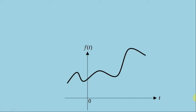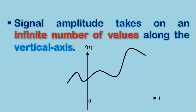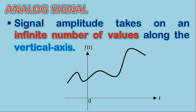Now look at this illustration. You may observe that the signal is taking on an infinite number of values along the amplitude, or along the vertical axis. A signal whose amplitude can take on any value in a continuous range along the vertical axis is known as an analog signal. So this figure illustrates nothing but an analog signal.